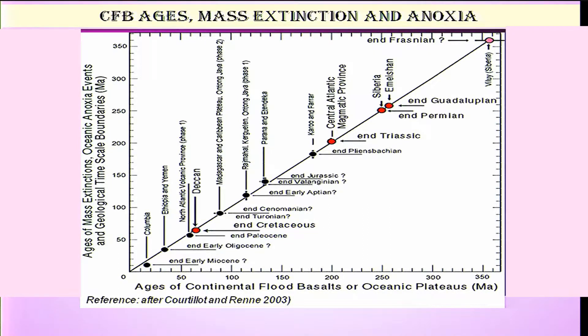I will show you a graph here where a sequence of how these large igneous provinces erupted throughout geological time in Earth's history. One of the oldest LIPs is somewhere in the Silurian age, and Deccan stands at the Cretaceous-Tertiary boundary — at the end of the Cretaceous period and the beginning of the Tertiary period. That is the beginning of Deccan volcanism in India.